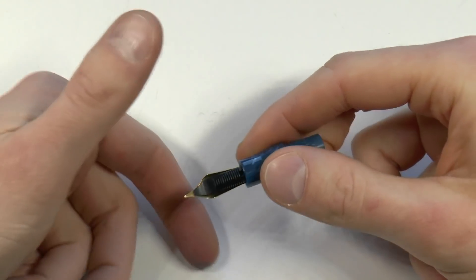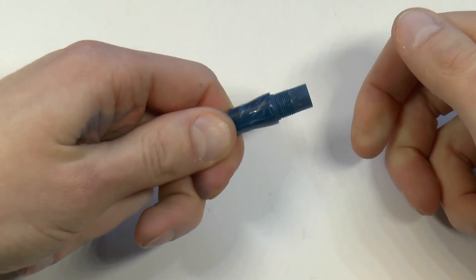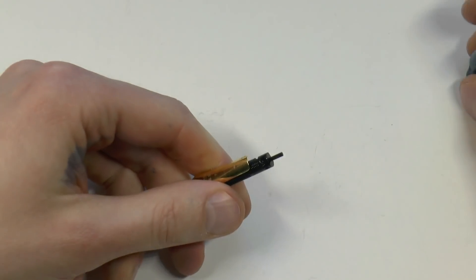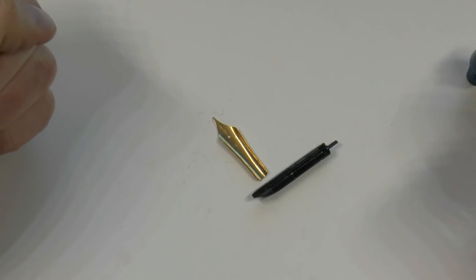You're going to get your finger there, thumb on top, hold that tightly, no twisting, no turning. Boom! Quick, sharp pull, and you've got the nib and feed separated.